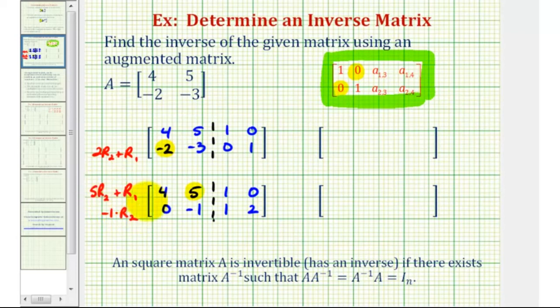So we'll have 5 times 0 plus 4, that's 4. 5 times negative 1 is negative 5 plus 5, that's 0. 5 times 1 is 5 plus 1 is 6. And 5 times 2 is 10 plus 0 is still 10.